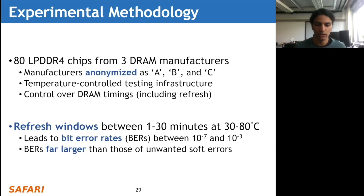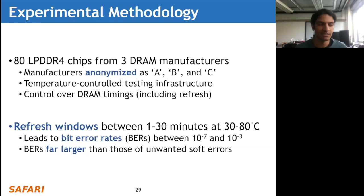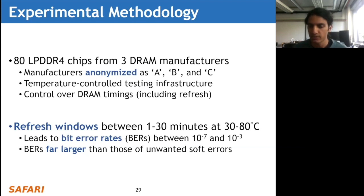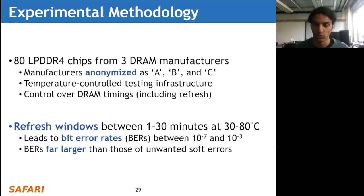A commodity DRAM chip in the market typically has a bit error rate of between 10^-15 and 10^-17, so these error rates are orders of magnitude higher - you can think of these errors as occurring rampantly throughout the DRAM chip. As an added bonus, these bit error rates are far larger than those of unwanted soft errors that might interfere with our experiments, such as particle strike effects causing random bit flips, so those aren't a concern because the error rates we're inducing are far higher.